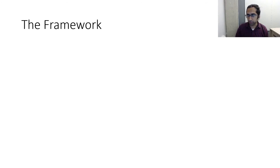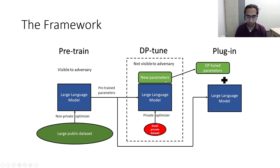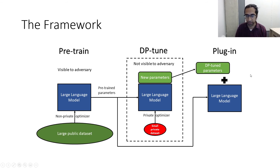This leads us to a three-step framework employing parameter-efficient fine-tuning in the private setting. Step one is pre-training the model on a large public dataset visible to the adversary, such as data scraped from the internet. Step two is private fine-tuning using a small private dataset, introducing new adapter-style parameters and training them privately so they are not visible to the adversary. Step three is deployment: the privately trained parameters are plugged into the original large language model, and different sets of privately trained parameters can be swapped in for different tasks, improving portability for settings like federated learning.